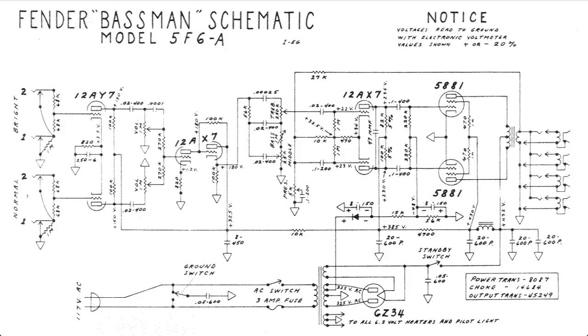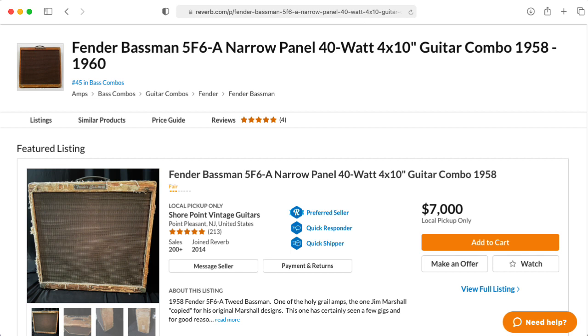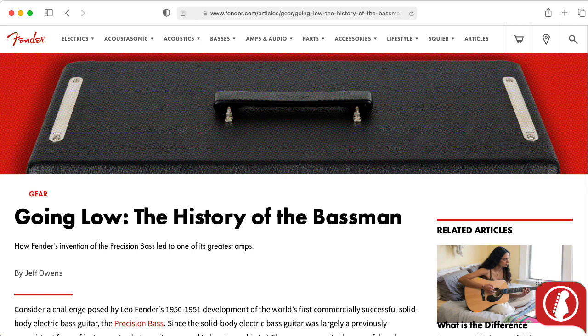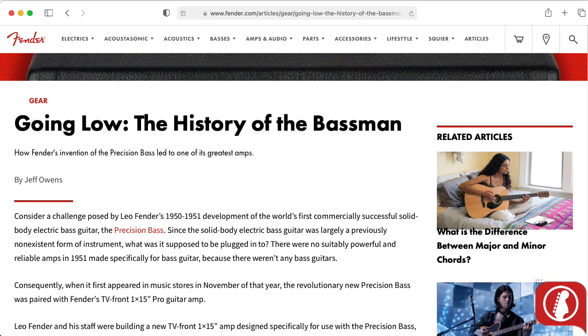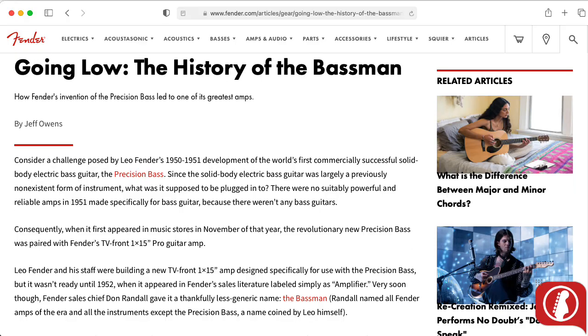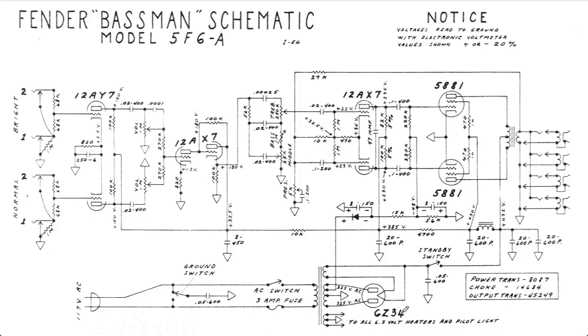So, let's take a look at the Fender Bassman. Actually, one particular Fender Bassman, the Model 5F6-A. You can think of this as the progenitor of all modern high-power guitar amplifiers. You can tell this is a pretty early Fender design because of the use of a tube rectifier in the power supply. We have the power supply down here, the main power amp stage over here, and the phase inverter that consists of a long-tailed pair here.